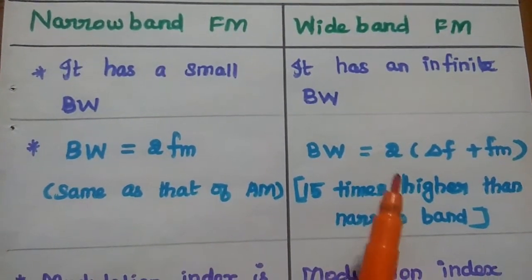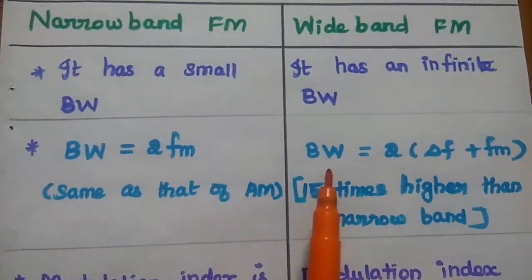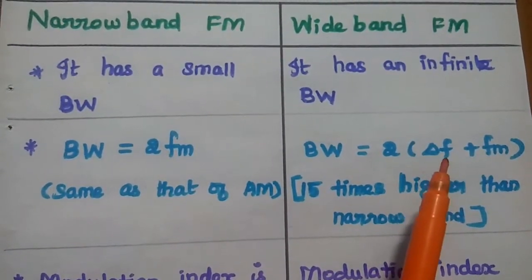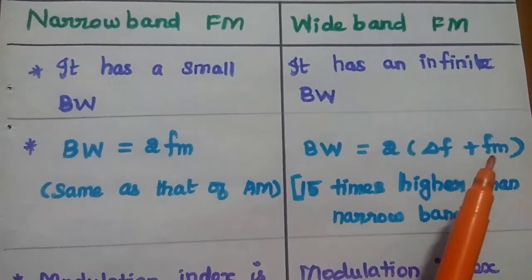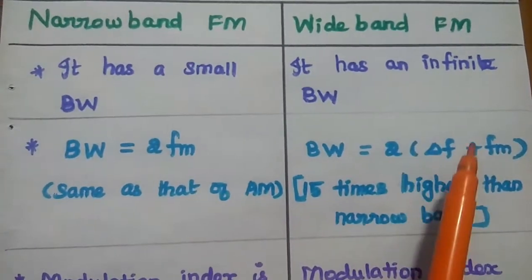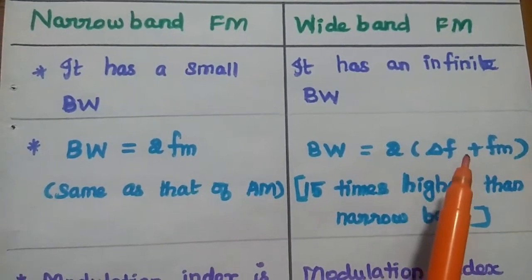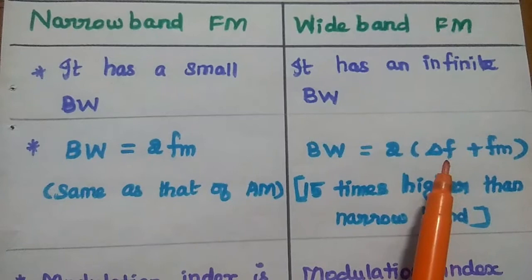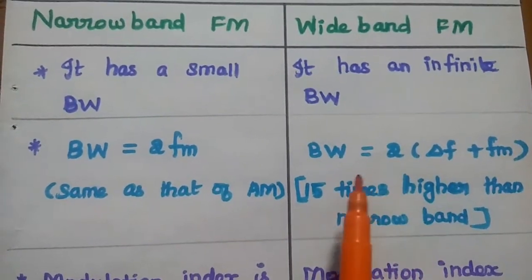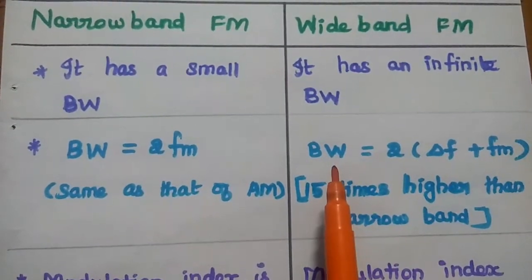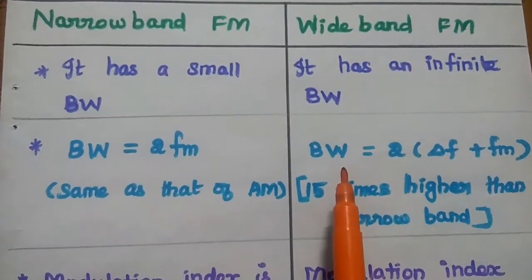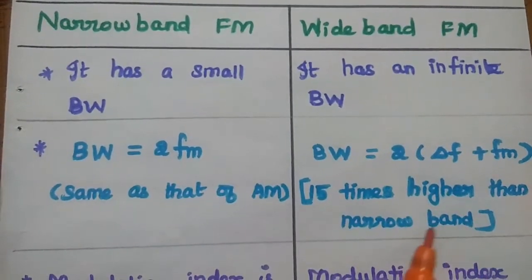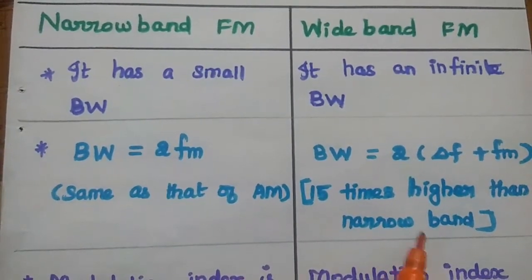In wideband FM, the bandwidth is equal to 2 times (delta F plus FM), where delta F is the maximum frequency deviation. Here, the bandwidth is approximately 15 times higher than the narrowband bandwidth.